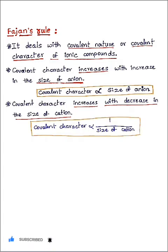Let's take examples to understand Fajan's rule. Example one: we have NaCl and NaBr, sodium chloride and sodium bromide. Among these compounds, we have to find out which one is more covalent or which one is less ionic.